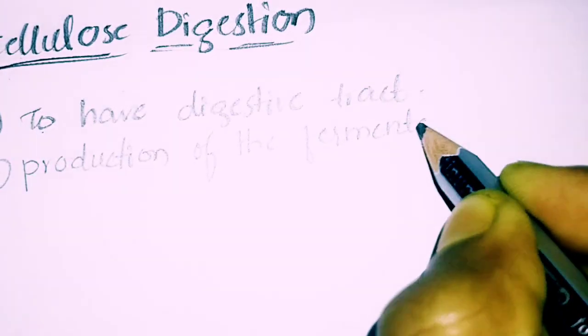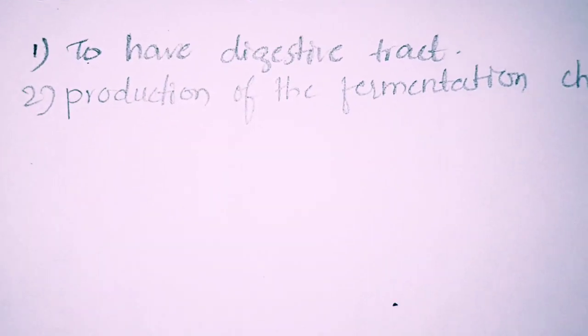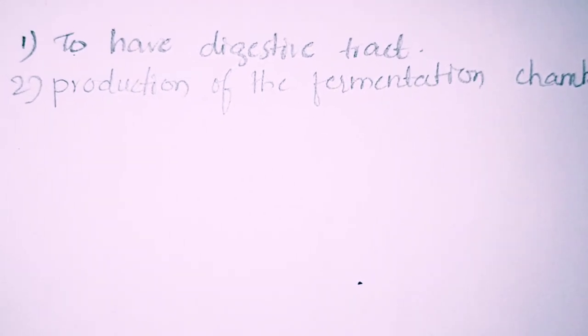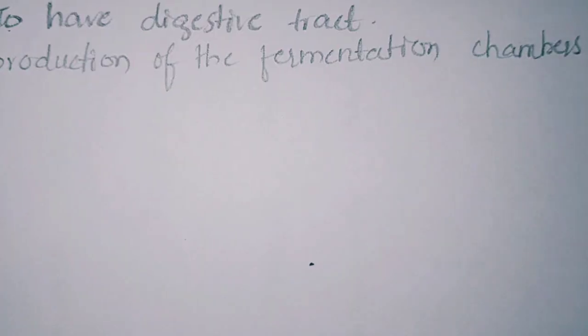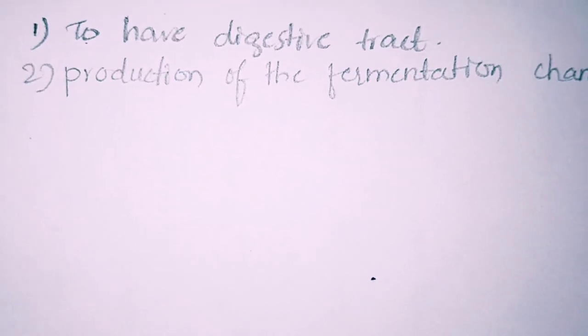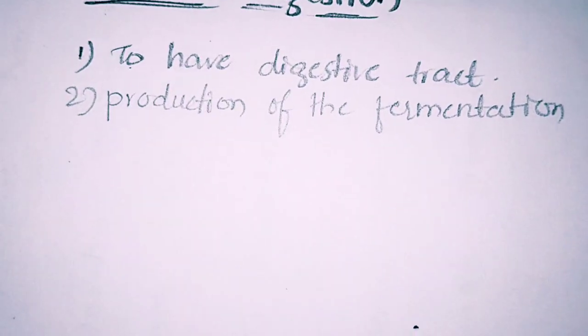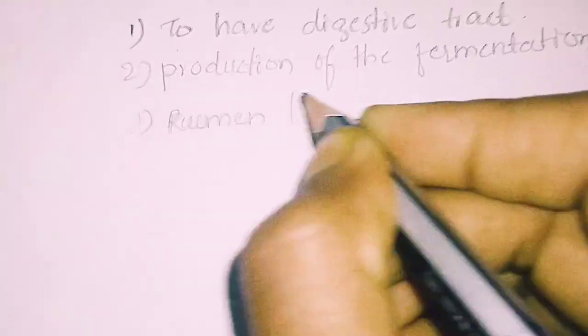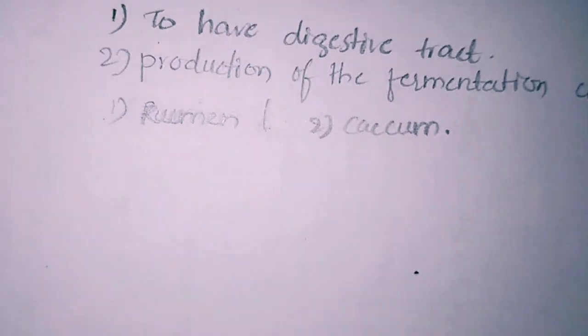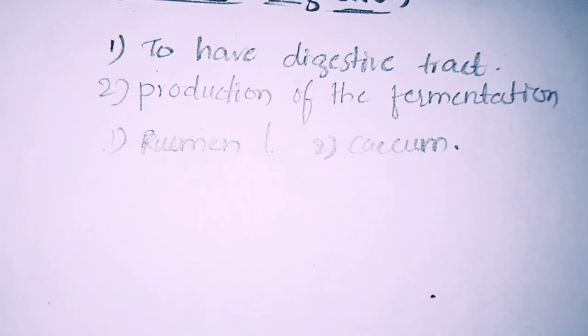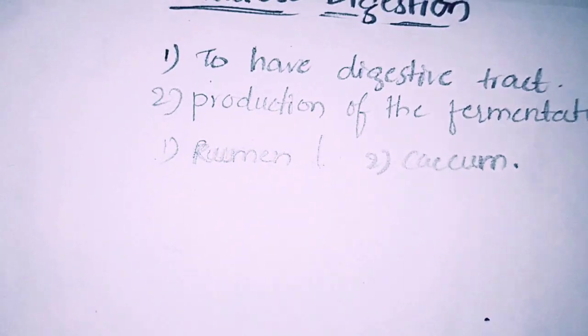These fermentation chambers usually possess or contain microbes that can be helpful for the production of the cellulase enzyme which results in the breakdown of cellulose. During this process there is a separate production or development of two separate fermentation chambers: one is the rumen, the other one is the cecum.